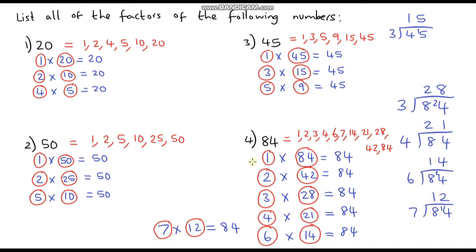In the next video we're going to be looking at multiples. Now factors and multiples are very closely related — they are opposites of one another. So here we could say that 4 is a factor of 84, whereas 84 is a multiple of 4, meaning 84 is in the 4 times tables. So that's what we're going to look at in the next video. Hopefully I'll see you there, and thanks for watching. Take care.